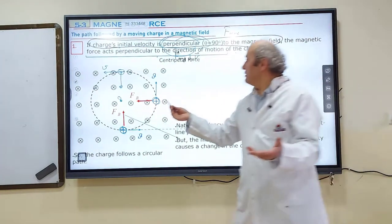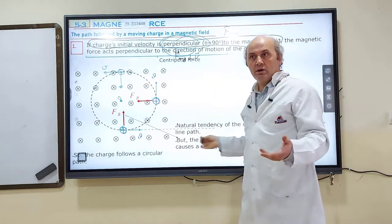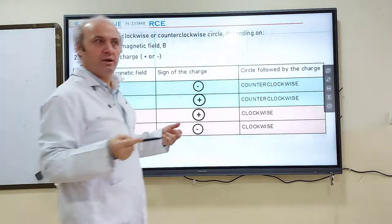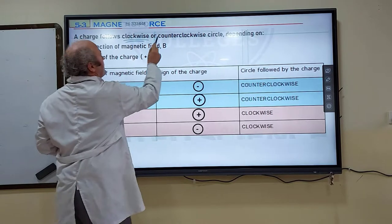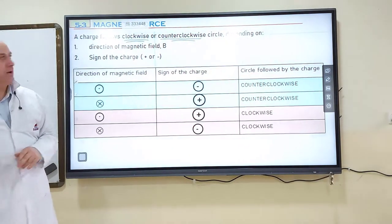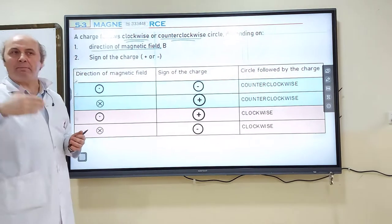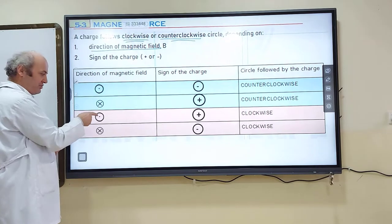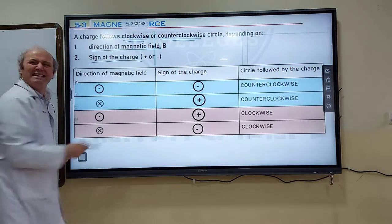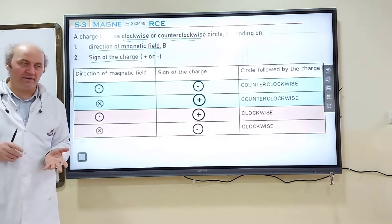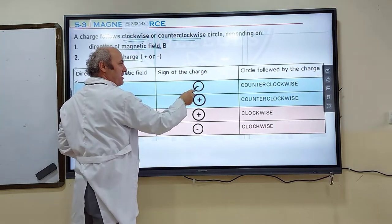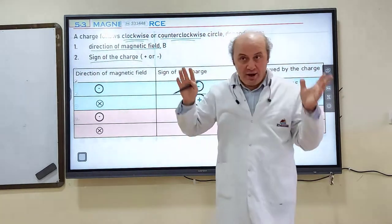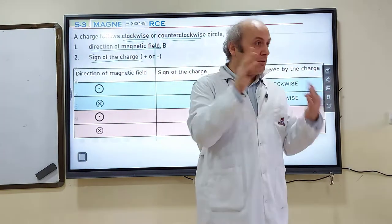But a circular path can be counterclockwise or clockwise. Two things determine the direction of the circular path: one is the direction of the magnetic field — it can be into the page or out of the page — and the second factor is the sign of the charge, which can be positive or negative. Depending on these two quantities, the circular path can be clockwise or counterclockwise. This table is a practical method to determine that.